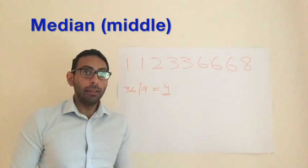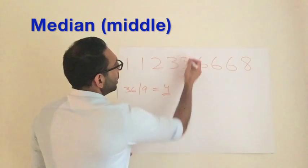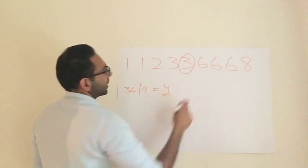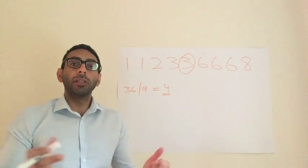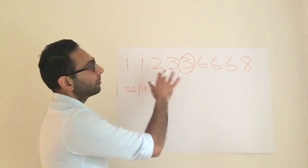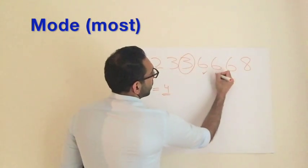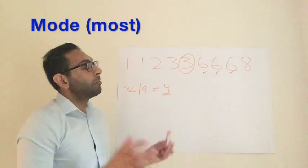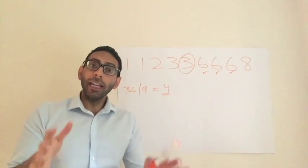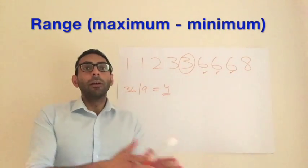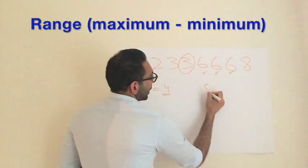Now if you're asked for the median, that simply means the middle value. So if you've got nine values in total, the middle one is going to be the fifth value - four on this side, four on that side. So your median is simply the middle value out of your set. The mode is simply the number or value that happens most often. In this case, six appears three times, therefore your mode is 6. And the range is simply your maximum value minus your minimum value - so 8 minus 1, giving a range of 7.